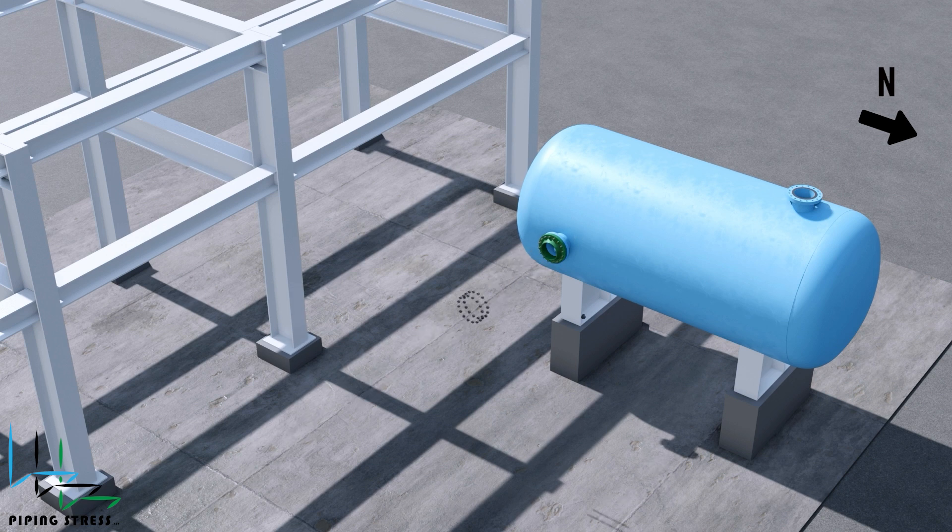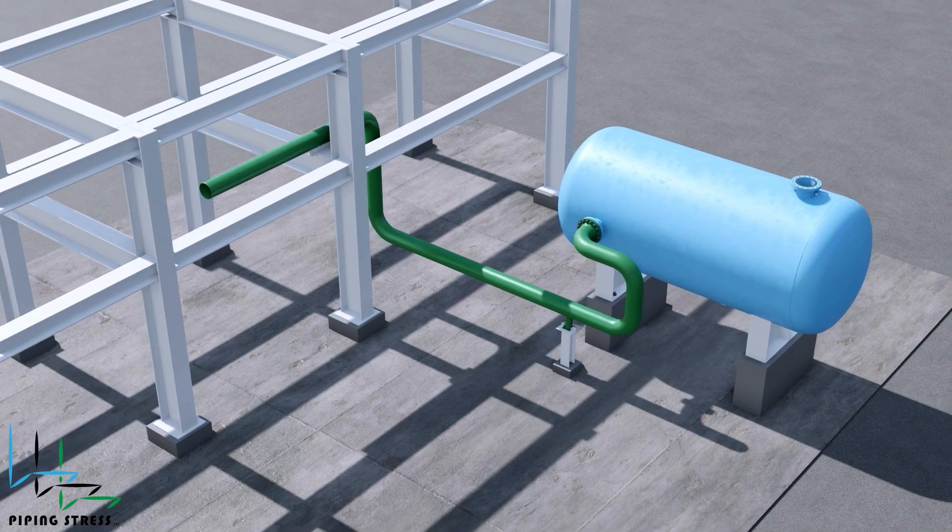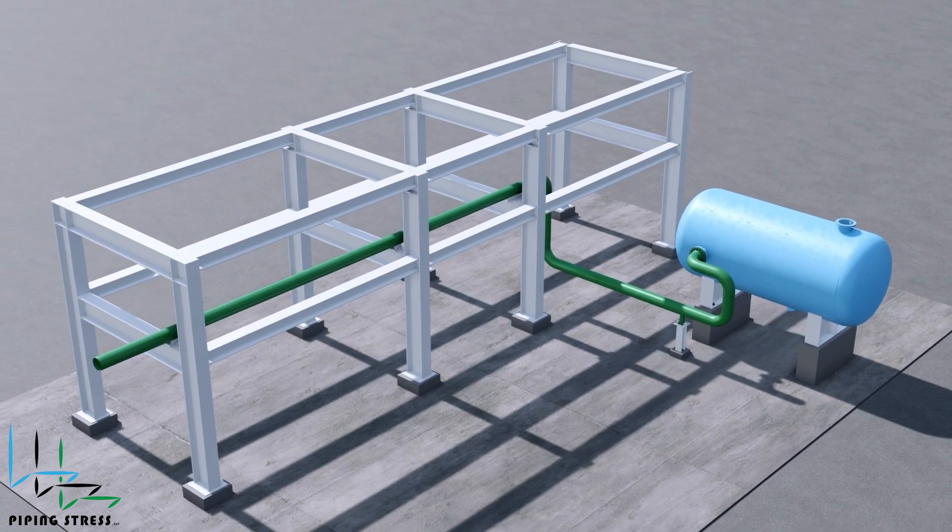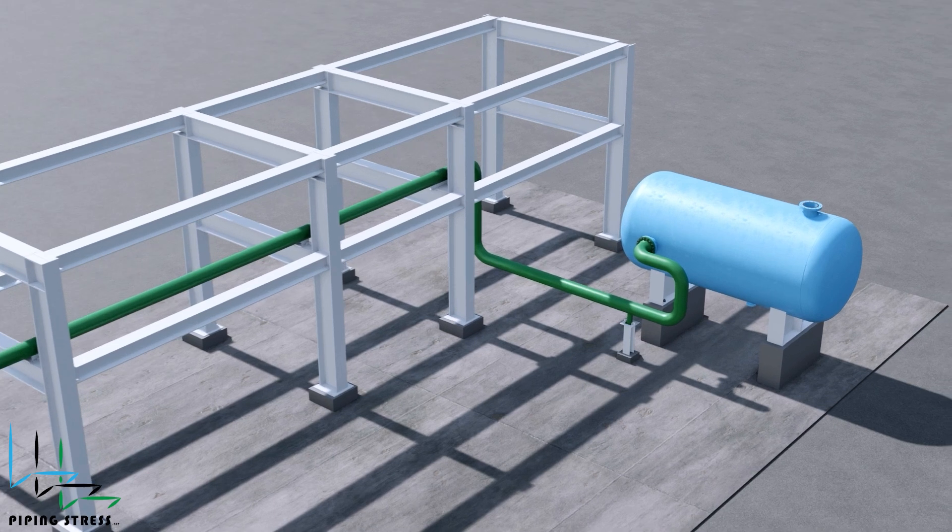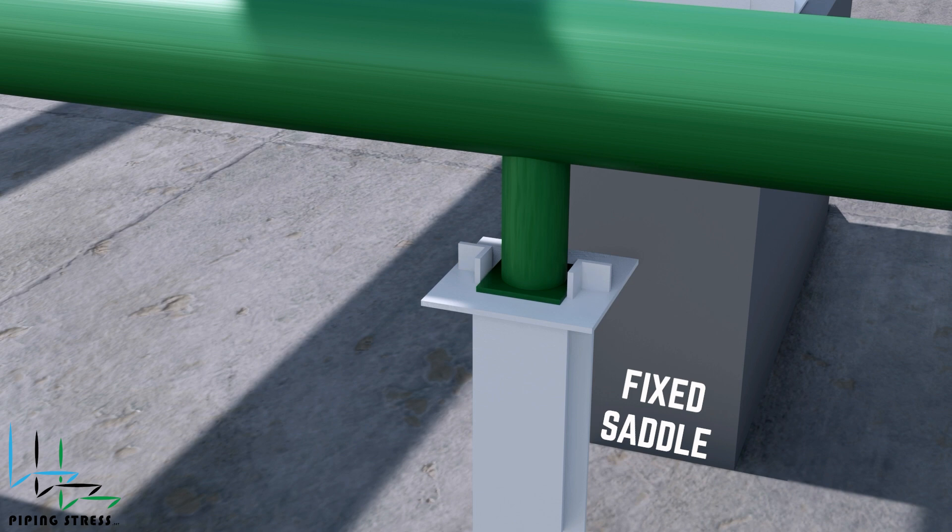Another approach is to direct the pipe northward after the nozzle, then make a downward turn to continue towards the pipe rack. In this design, it would be more appropriate to place the first pipe support in line with the fixed saddle. This is because the thermal expansion of the pipe will align with the thermal expansion of the equipment. Similarly, seismic effects in the z-direction will not create any moment on the nozzle.